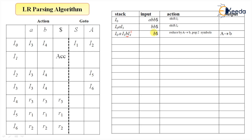Next is i4 on input 'b'. Looking at the table, i4 on input 'b' leads to a reduction by the third production — that is, A derives b. There is a three-step process: we need to pop symbols. We pop two symbols — because the right-hand side 'b' has length one, so we pop two symbols.